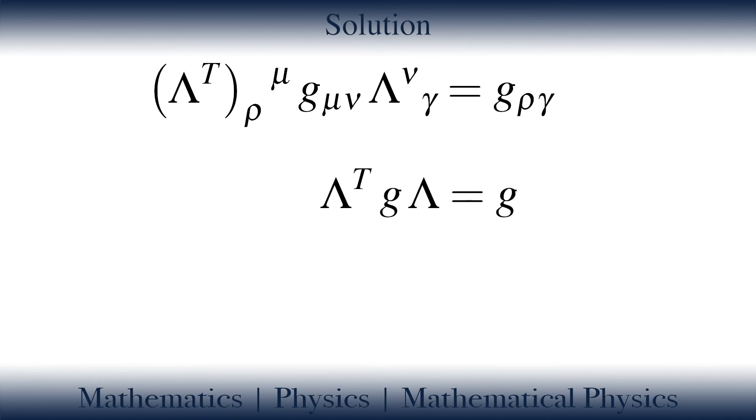lambda transpose g lambda is equal to g. With this, I finalize our proof and conclude this episode.